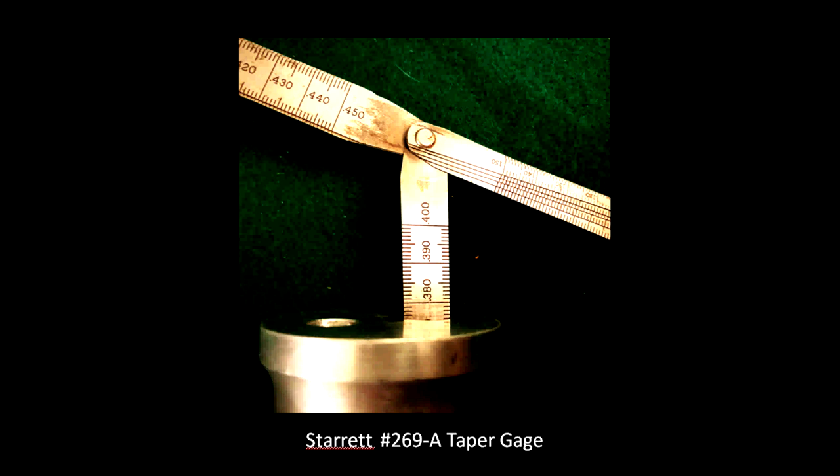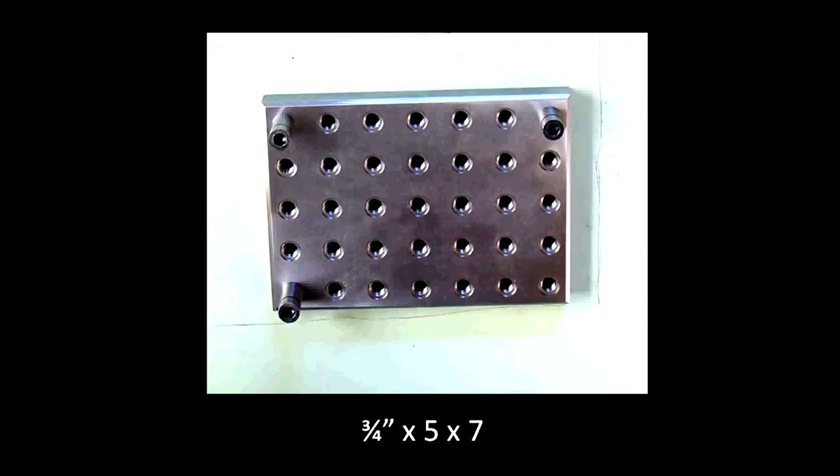So pretty cool, and a nice little addition if you want to show them off, but there you have it, the Starrett 269A taper gauge. So let's talk about today's lesson. Before we get into the video portion of it, here we go. We talked about, I made this little subplate to put my Kurt vise. And these are some 3/4 by 5 by 7 plates that were left over from a job.